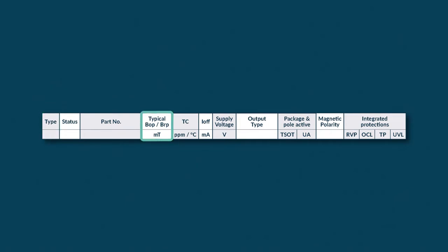The typical BOP and BRP indicate the thresholds that are programmed when ordering a specific part number. TC stands for temperature compensation. Thanks to this feature, our thresholds will follow the same curve over temperature as the magnet. This is a great benefit if the application is used in a wide temperature range with ferrite or lower cost material.